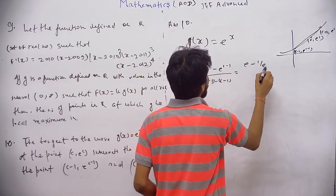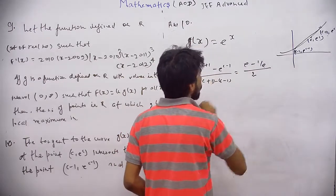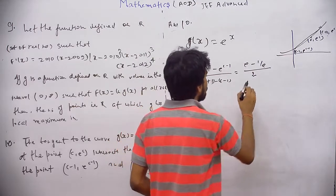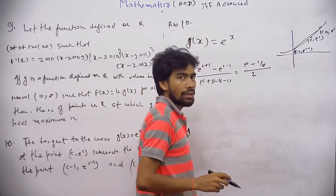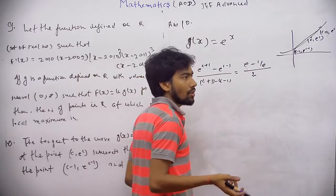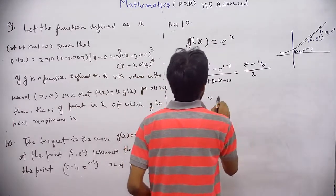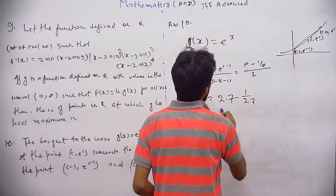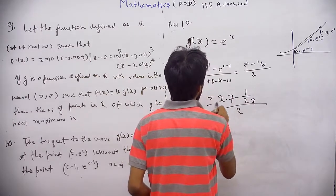E minus 1 by e divided by 2. And what is the value of e? It's approximately 2.71 or we can take 2.7. Okay.